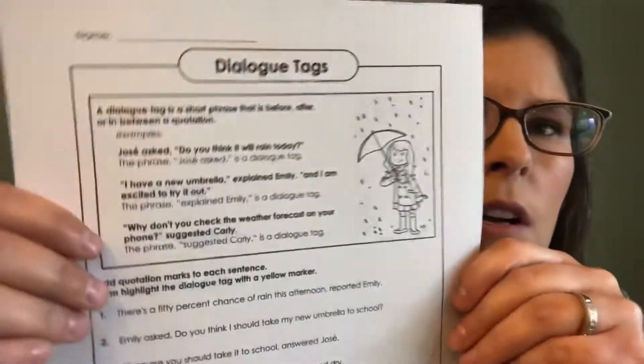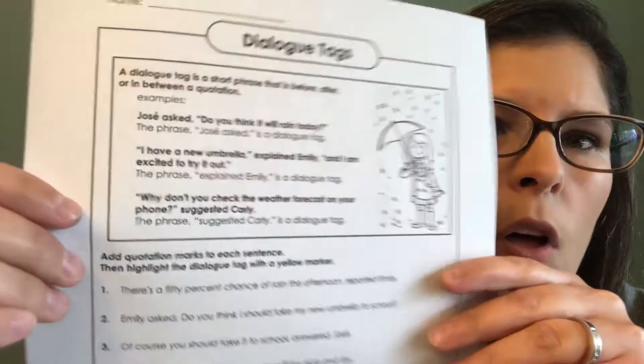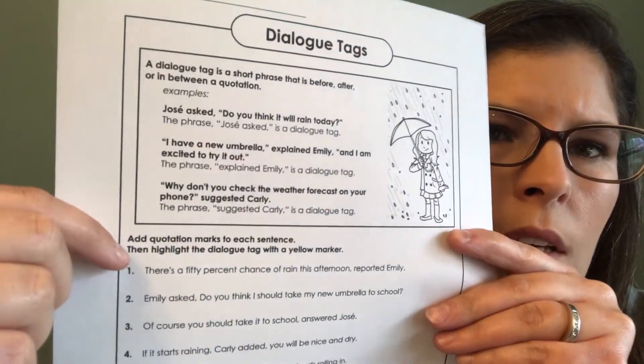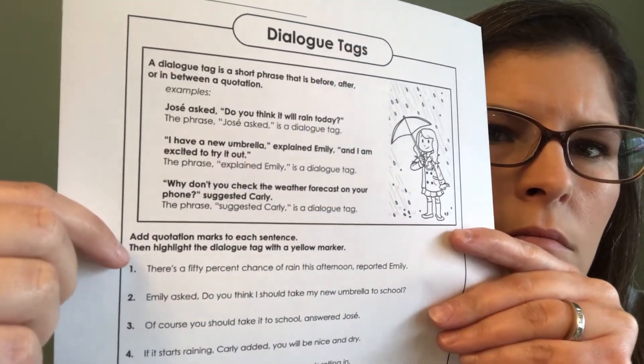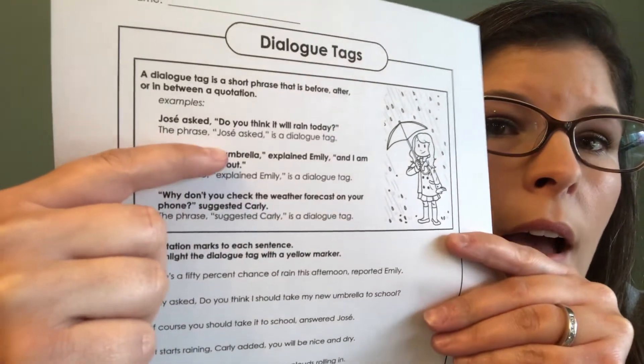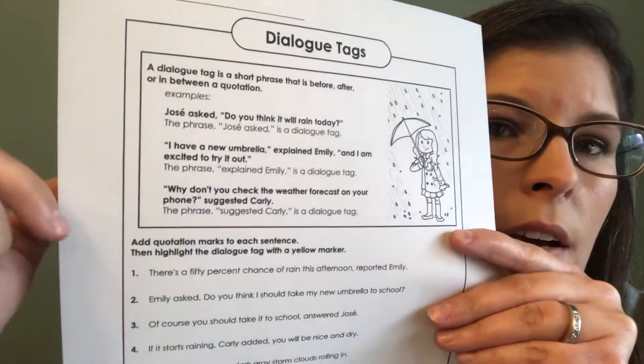We have to look first for our dialogue tags. Our dialogue tags are who's saying it. So for example: 'Jose asked, do you think it will rain today?' — 'Jose asked' is our dialogue tag.